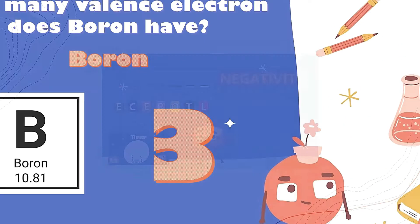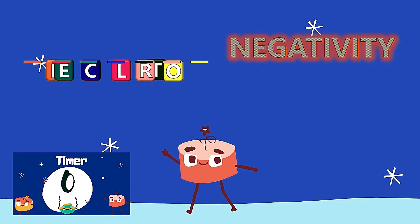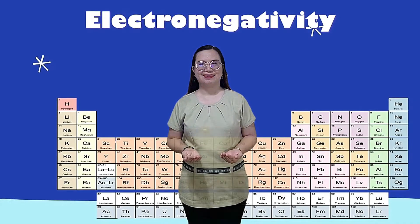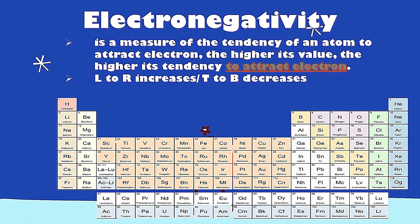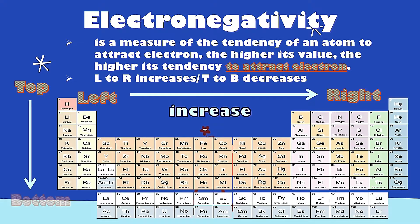Can you guess these jumbled letters? Very good! It's electronegativity. Electronegativity is a measure of the tendency of an atom to attract an electron. The higher its value, the higher its tendency to attract an electron — in short, it is the tendency or ability to attract electrons. Remember that electronegativity increases from left to right, while from top to bottom it decreases.